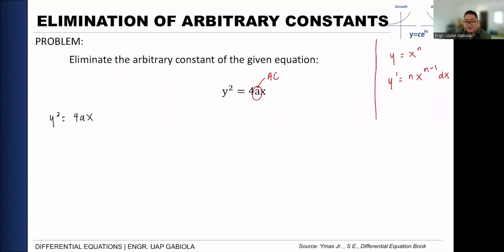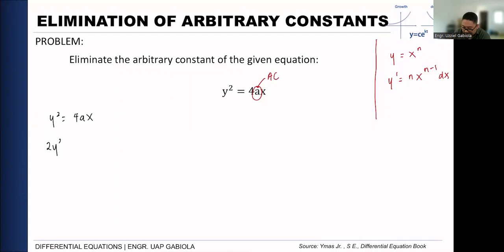Now we substitute the value of 'a' back into the original equation. y² = 4·(½y·y')·x, so y² = 2y·y'·x. Dividing both sides by y gives y = 2x·y'. Rewriting y' as dy/dx and cross-multiplying: y dx = 2x dy. Moving everything to one side using the general form M(x,y)dx + N(x,y)dy = 0, our differential equation becomes y dx − 2x dy = 0. The arbitrary constant has been successfully eliminated.